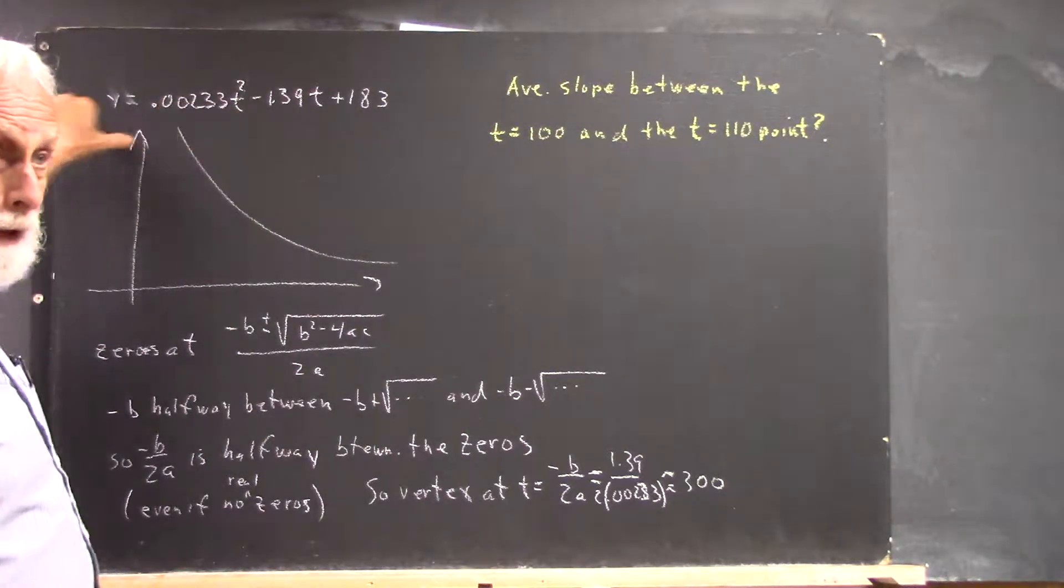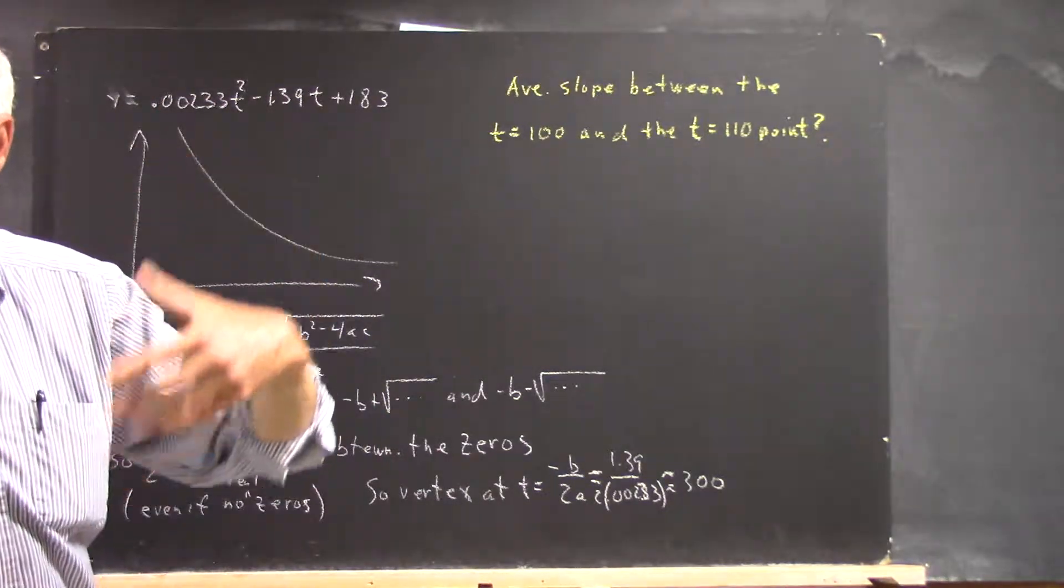That means you're going to plug 110 in for t and get your y coordinate. Then you're going to have the coordinates of your point, right?